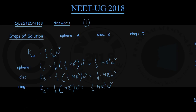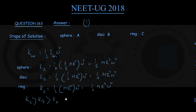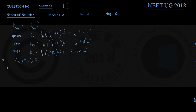By comparison we quickly get that for the ring the kinetic energy K_C is the maximum, then comes the rotational kinetic energy of the disk K_B, and the smallest kinetic energy is for the sphere K_A. So K_C > K_B > K_A. But the question asks us to compare the work required to stop these rotating objects.